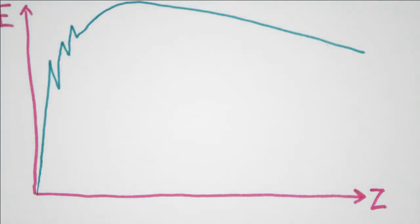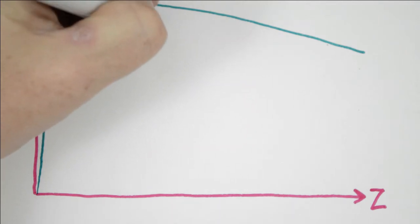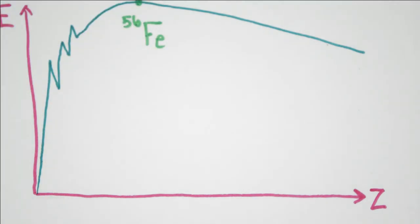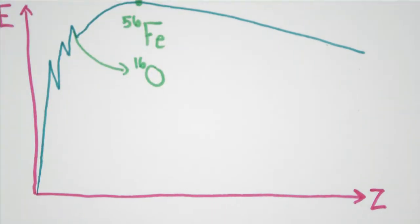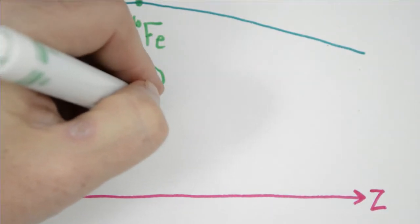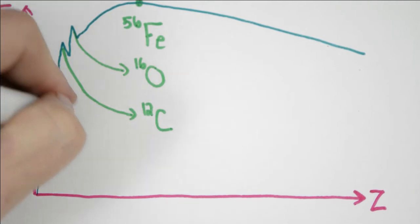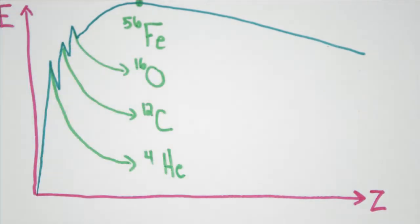One of the key points on this graph is iron 56, which amasses at the center of all high-mass stars. We also see that there's a spike for oxygen 16 and a spike for carbon 12, which are essential for life. And finally, there's a little spike at helium 4, which means that it shows up fairly often when we consider nuclear fusion.